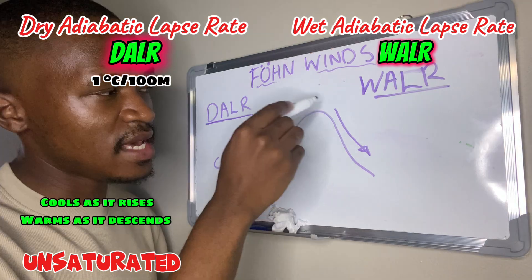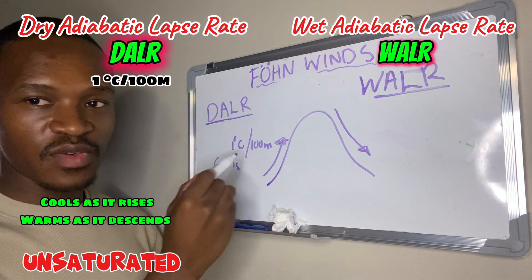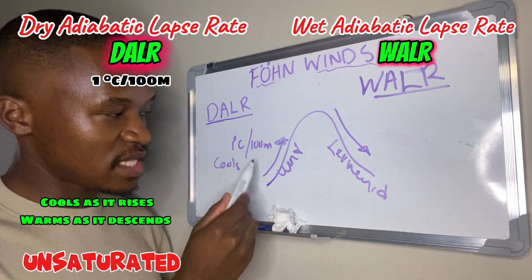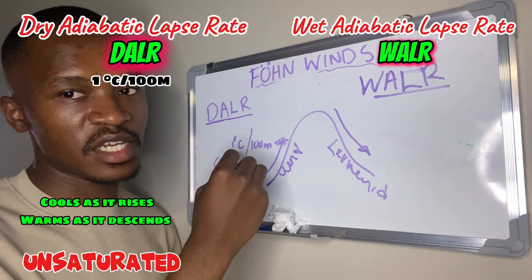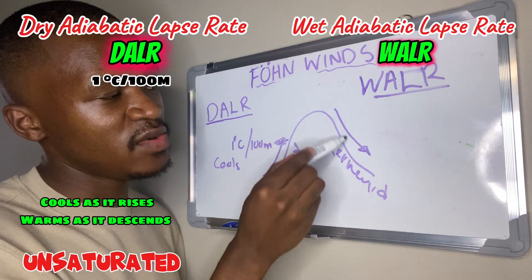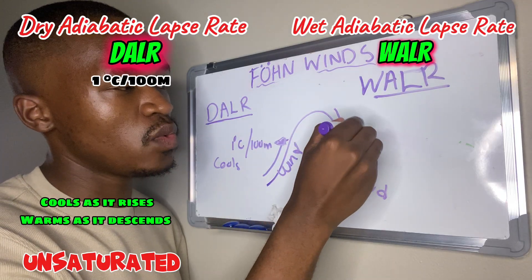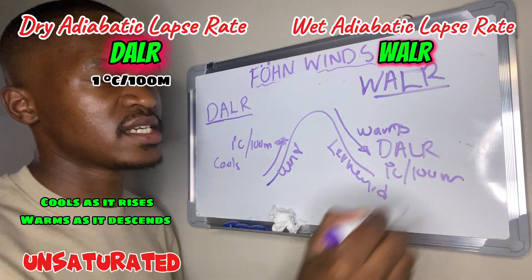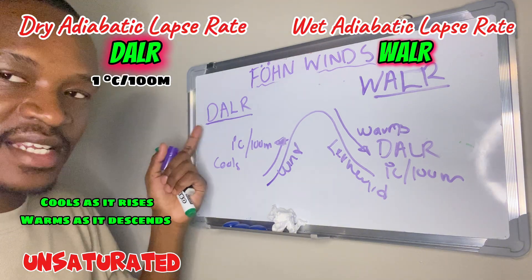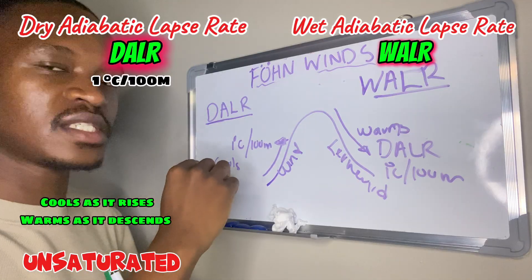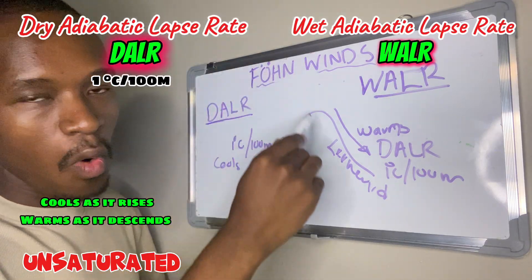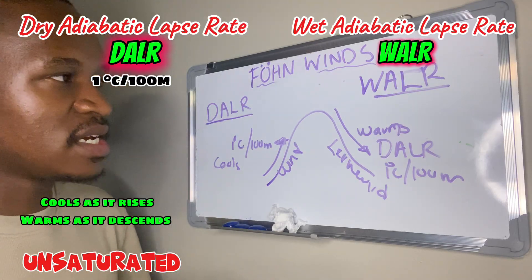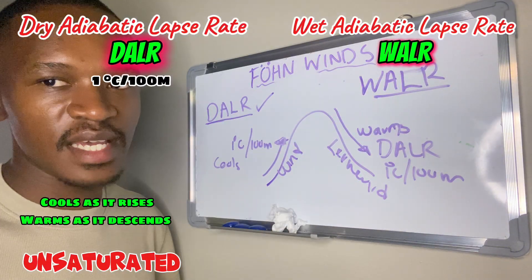On this side of the mountain it descends, but on this side it was rising. The windward side is where the air was rising, and as it rises it cools. On the leeward side it descends, and as it descends it warms up at a dry adiabatic lapse rate of 1 degree Celsius for every 100 meters. So the dry adiabatic lapse rate is the rate at which unsaturated air cools as it rises and warms up as it descends.